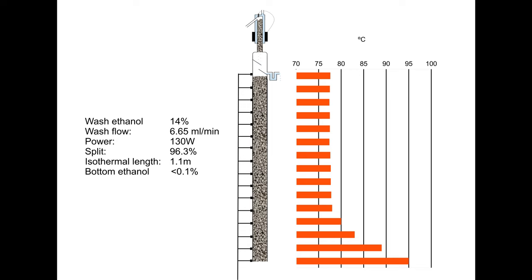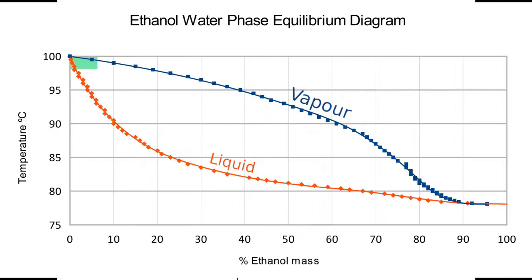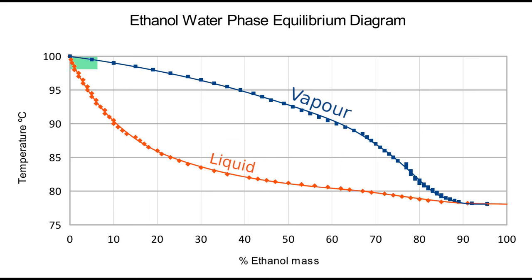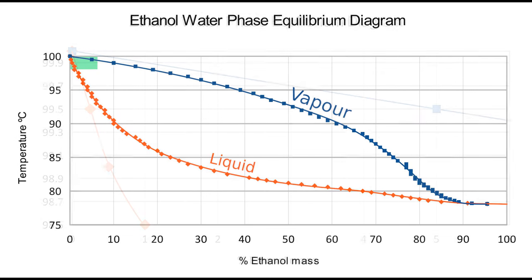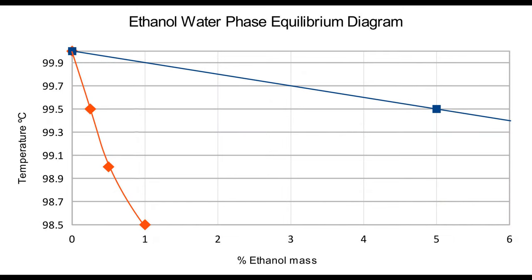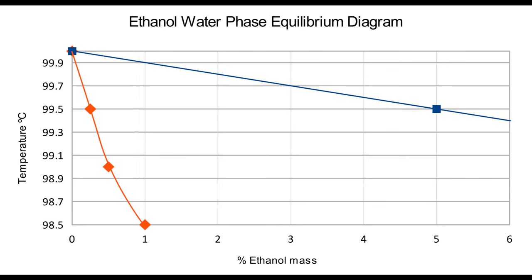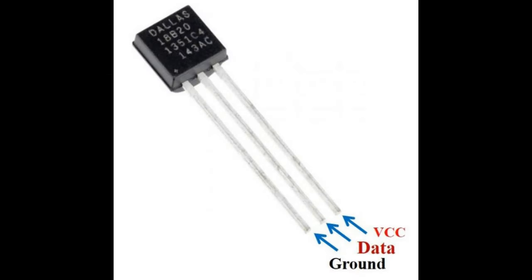For the bottoms temperature it's different. Looking at the phase diagram of the alcohol-water system, and zooming in on the top left-hand corner, we can see that to get the alcohol content well below 1% we're going to have to get the temperature very close to the boiling point of water, within a fraction of a degree. Keeping it within about 0.3 degrees Celsius of the boiling point of water pretty reliably keeps the alcohol content under 0.1%. That precision is not too difficult to achieve as the DS18B temperature sensors have enough resolution. But there is a significant problem.